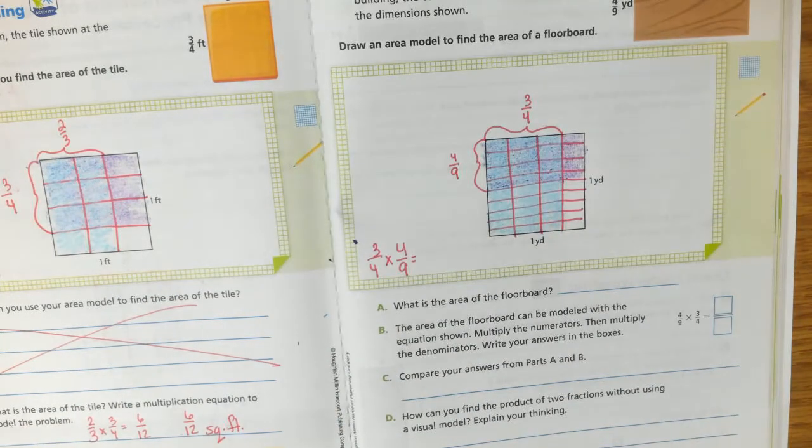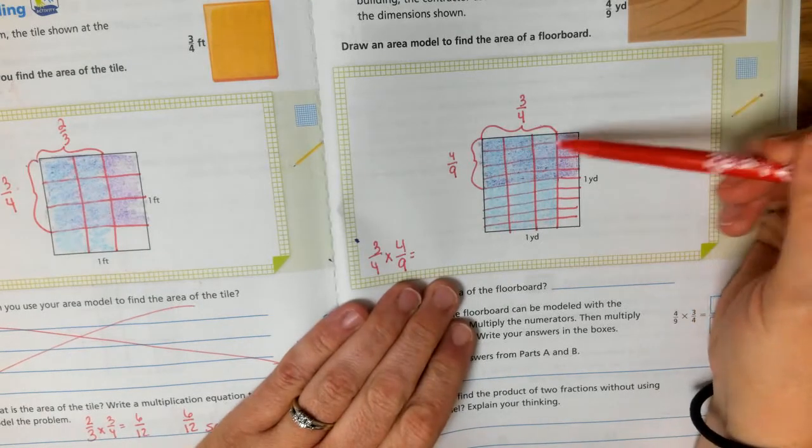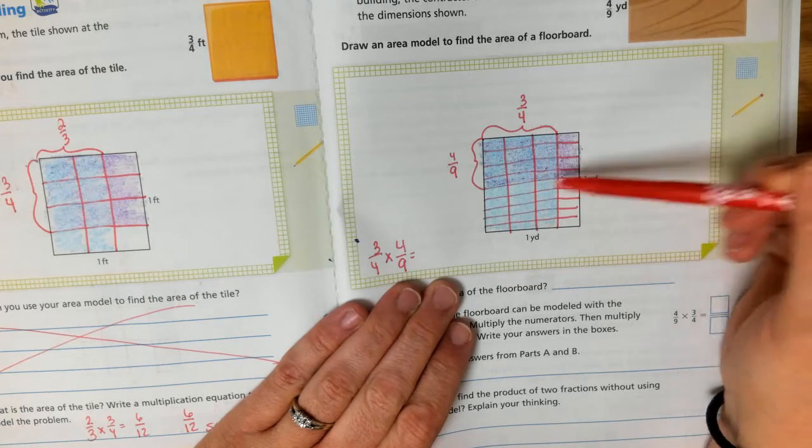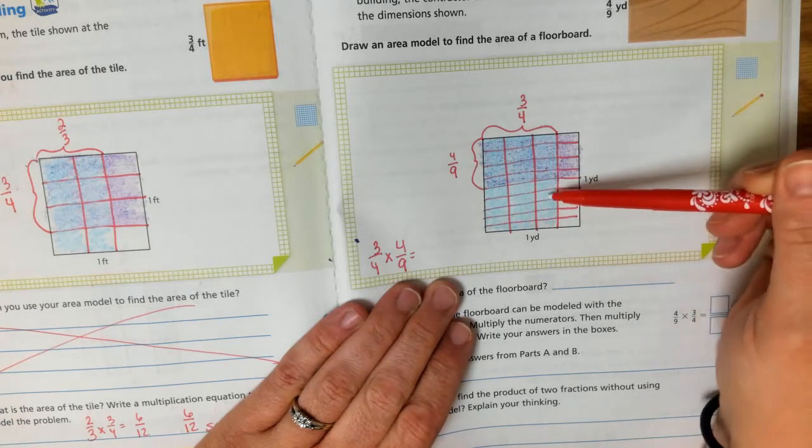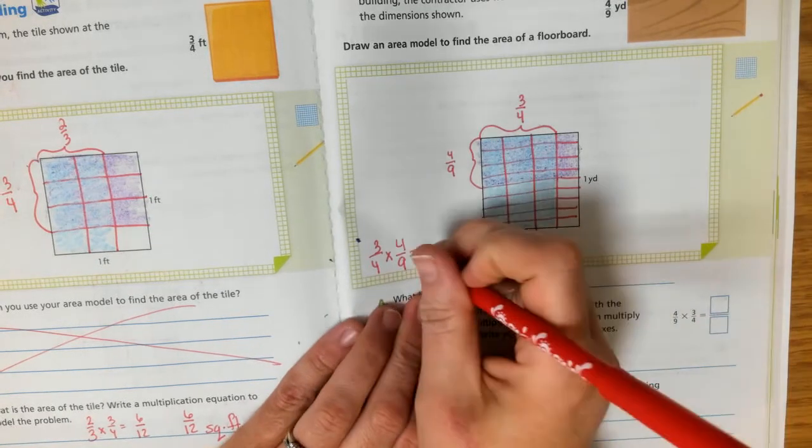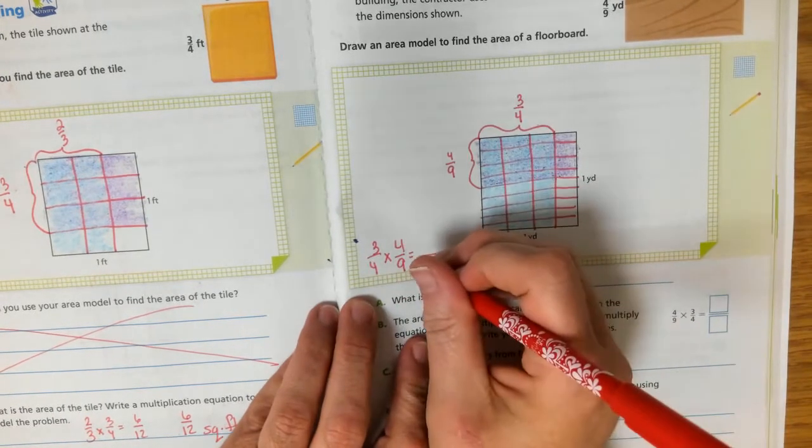So how many total pieces do I have? One, two, three, four, five, six, seven, eight, nine, ten, eleven, twelve, thirteen, fourteen, fifteen, sixteen, seventeen, eighteen, nineteen, twenty, twenty-one, twenty-two, twenty-three, twenty-four, twenty-five, twenty-six, twenty-seven, twenty-eight, twenty-nine, thirty, thirty-one, thirty-two, thirty-three, thirty-four, thirty-five, thirty-six.